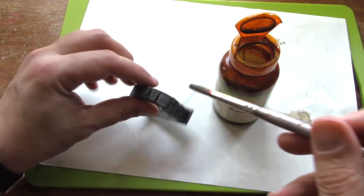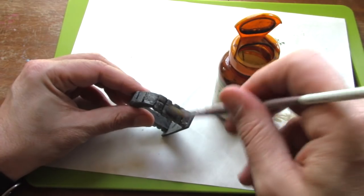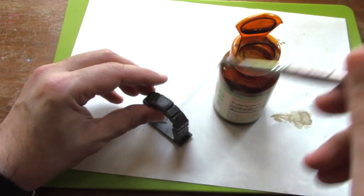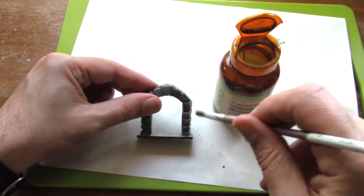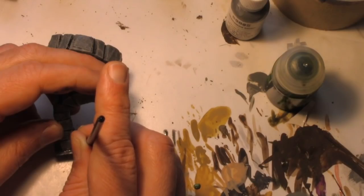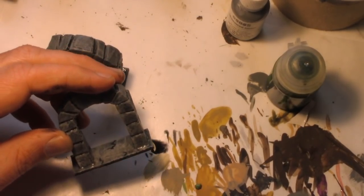I use the wash liberally, letting it settle into the cracks and tinting the overall color a unified darker gray. You can embellish the base by adding a few cracks, if you'd like.